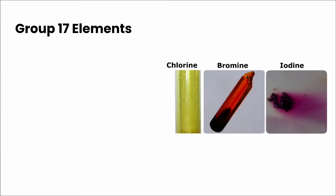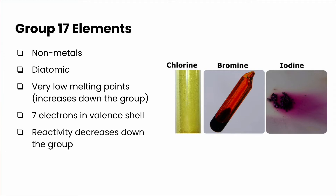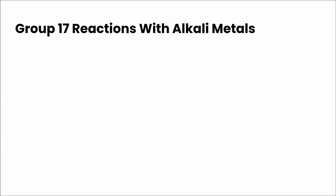Next let's take a look at our group 17 elements — these are our halogens. They are all non-metals, they're diatomic, and they have very low melting points which increase down the group. They also have seven electrons in their valence shell and their reactivity actually decreases as you go down the group. In this video we're going to look at their reactions with the alkali metals.